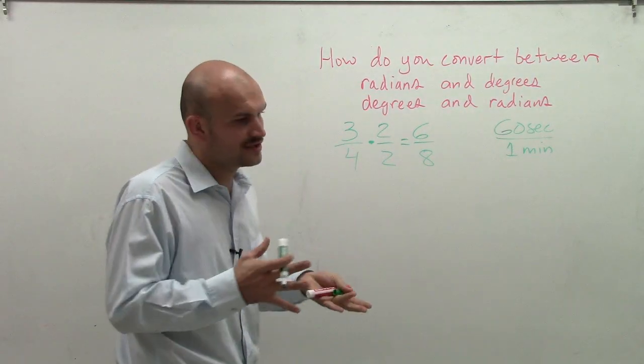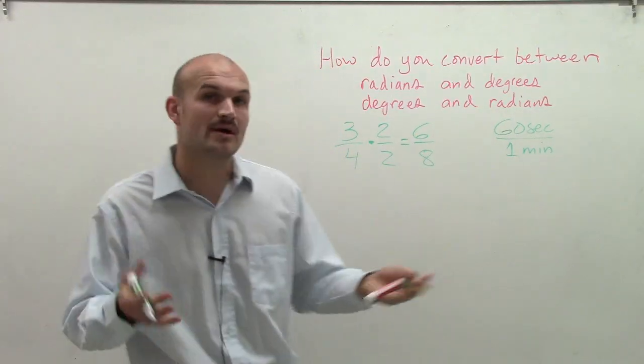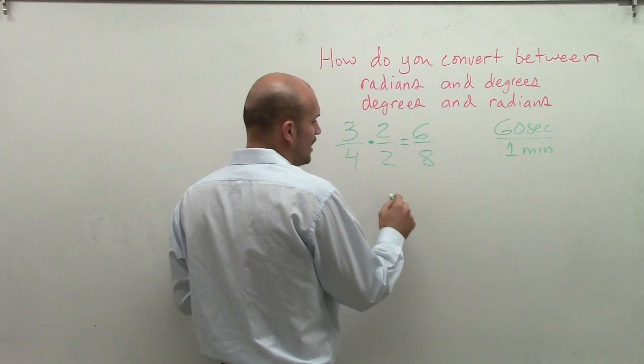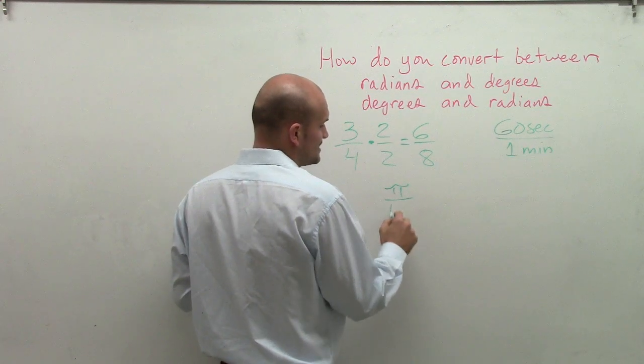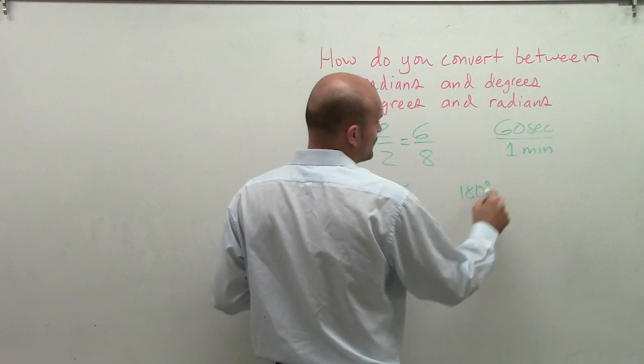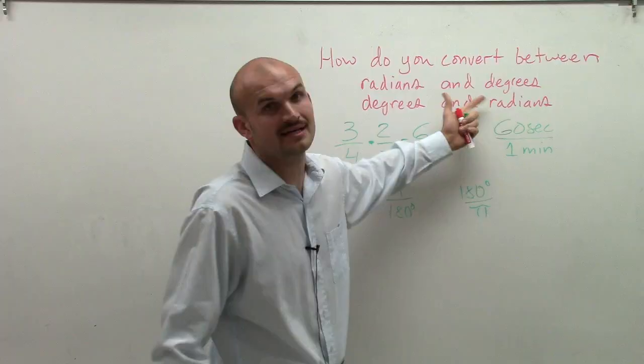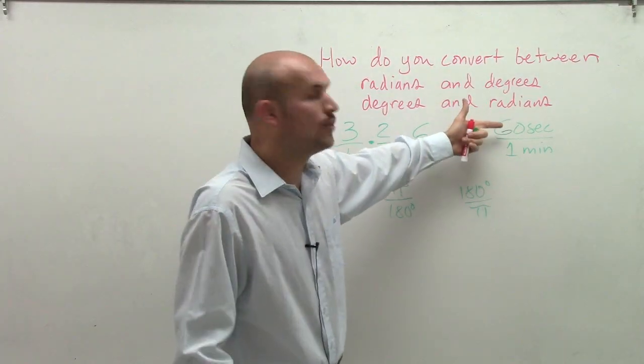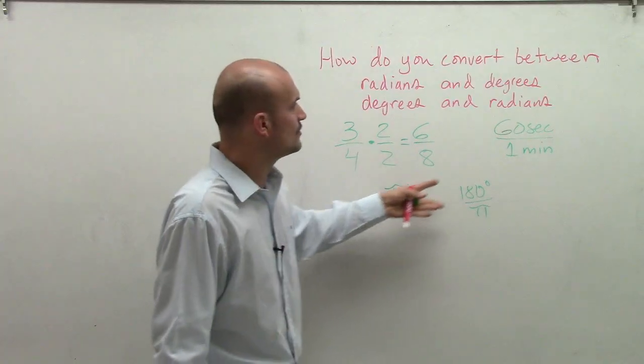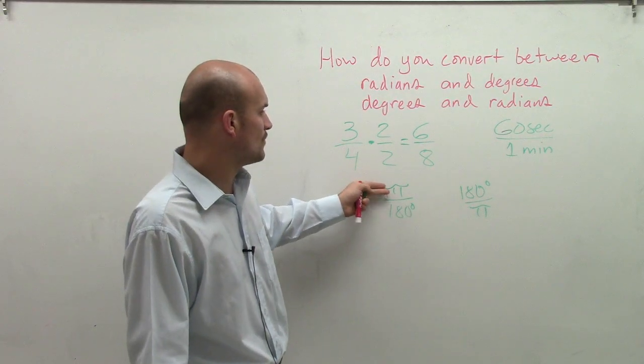What I need to do is look at the ratio between radians and degrees. One way we can look at that ratio is I could say that π is the same as 180 degrees and 180 degrees is the same as π. It's just like saying 60 seconds is the same as 1 minute or 1 minute is the same as 60 seconds. However, now we're talking about units. Rather than minutes and seconds, we're talking about radians and degrees.